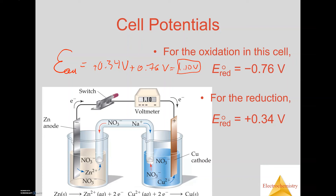One important thing to remember: even when you balance the half-reactions — for instance, two electrons are transferred — you do not multiply the reduction potentials by any coefficient. It's not like other problems where you multiply by two, three, or four based on the balanced equation. You always take the reduction potential numbers as they are and apply them directly in the cell potential equation. In the next video we'll look at free energy and cell potential, and how they relate to each other, concluding with the Nernst equation. Thanks for watching.